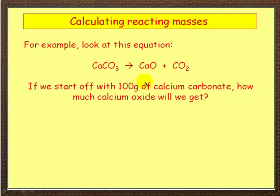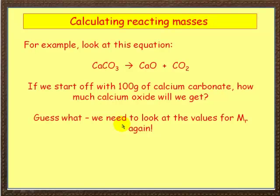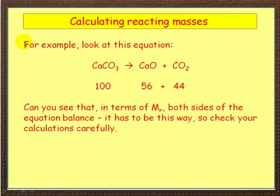Not as difficult as it sounds. Now guess what, yes we need to look at the values for relative molecular mass again, remember that from the periodic table? Now remember how to calculate these? So what was it, calcium is 40 and carbon is 12 and there's 3 times 16 makes 100, nice round number. So 100 there, 56 and 44.